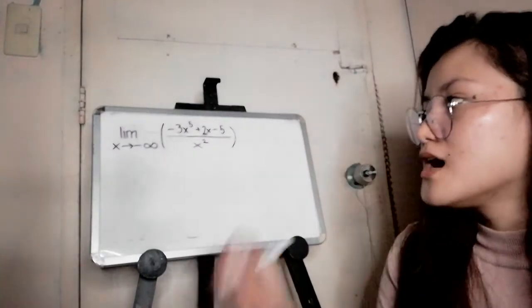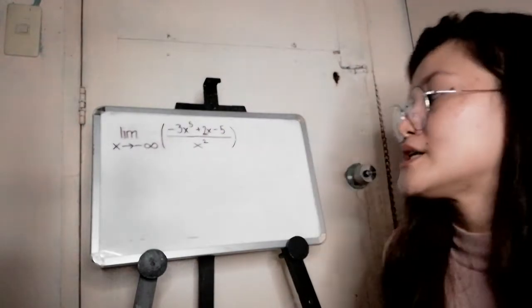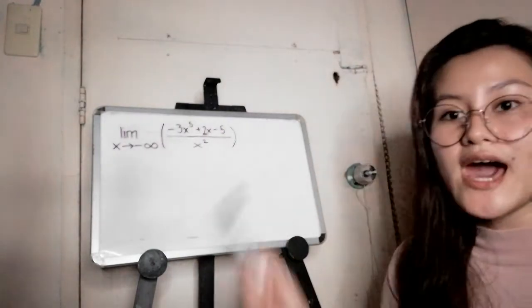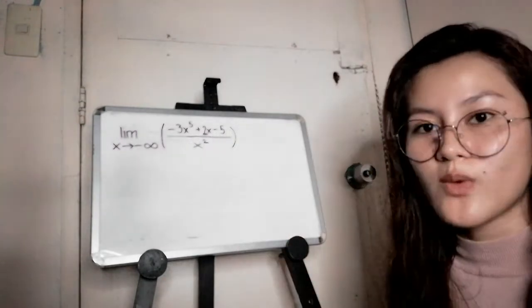Hi guys, in this problem we have the limit of x as it approaches negative infinity of the function: negative 3x to the power of 5 plus 2x minus 5, over x squared.